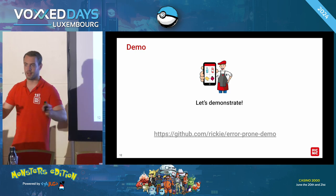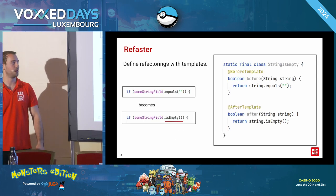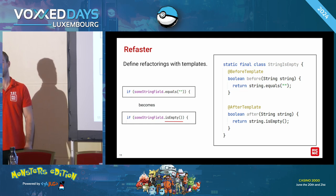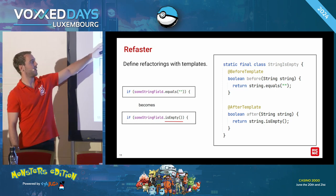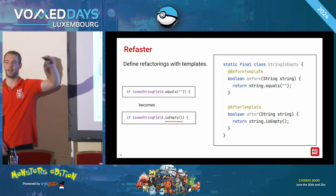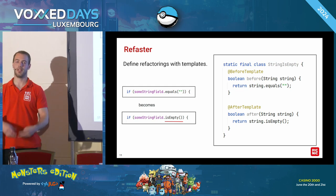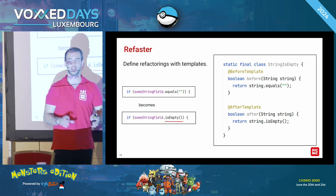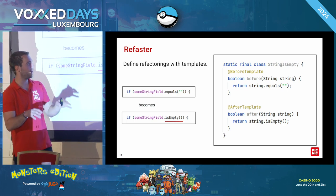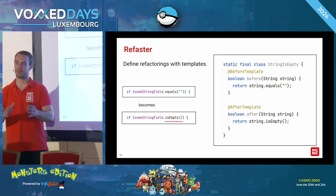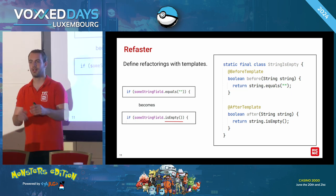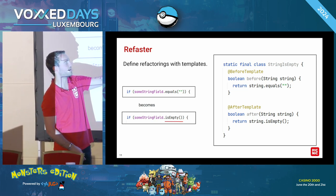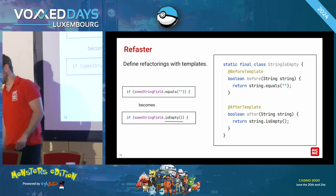There's a question: if instead of having a string field we would have a function call to a method that returns a string and then use equals, would it then match? Yes, it would. That's exactly why it's important to note that this refaster rule doesn't actually get executed — it's basically a domain-specific language on how to define refactoring operations. So it takes this or your method call, puts it in, checks if it matches, and then rewrites it. Very good question.